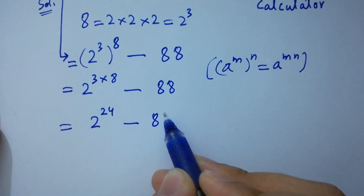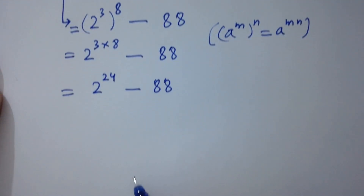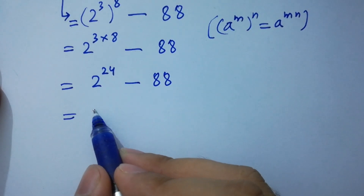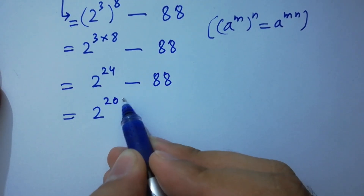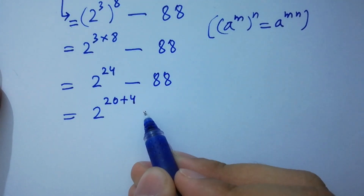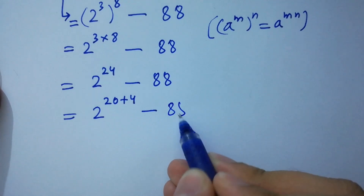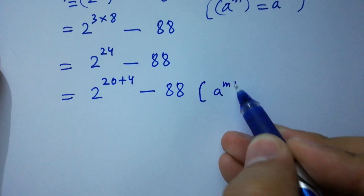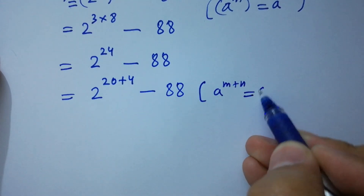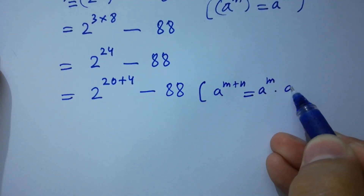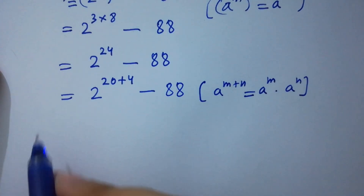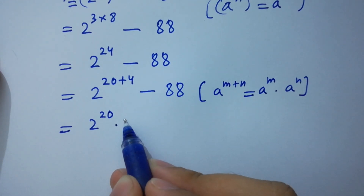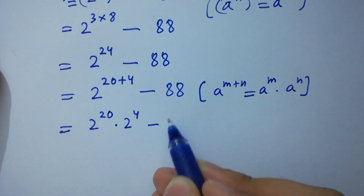So we have 2 to the power 24 minus 88. This is the same as 2 to the power 20 plus 4 minus 88. Using the rule a to the power m plus n equals a to the power m times a to the power n, it becomes 2 to the power 20 times 2 to the power 4, minus 88.